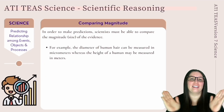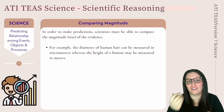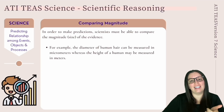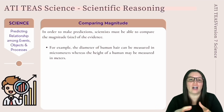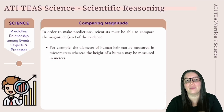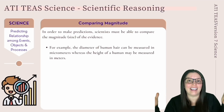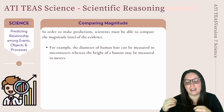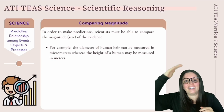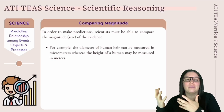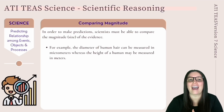Predicting relationships among events, objects, and processes begins with comparing magnitude. When scientists try to determine these relationships, they use evidence from experiments to make predictions, and they must compare the magnitude or size of that evidence. For example, the diameter of a human hair is measured in micrometers, whereas the height of a human is measured in meters. It's important to understand the concept of scale when comparing magnitude.